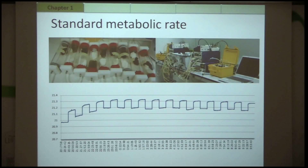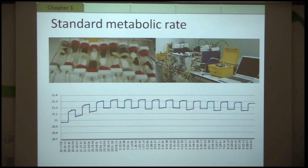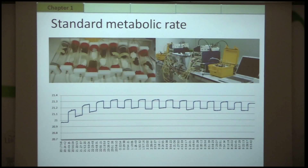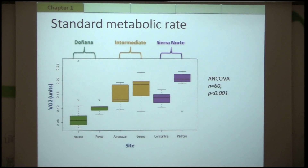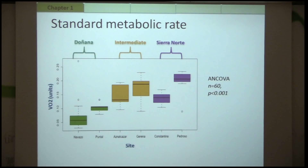The standard metabolic rate test is set up in the laboratory overnight. All animals are put in a terrestrial respirometer each, and for each hour during the whole night I take the average point of oxygen consumption volume where the animal was resting most constantly. I get one average value of oxygen consumption rate per animal and did an ANCOVA test with body mass as covariate. There is a decline with lower metabolic rate in Doñana and higher metabolic rate in the Sierra Norte, and I do get significant results.